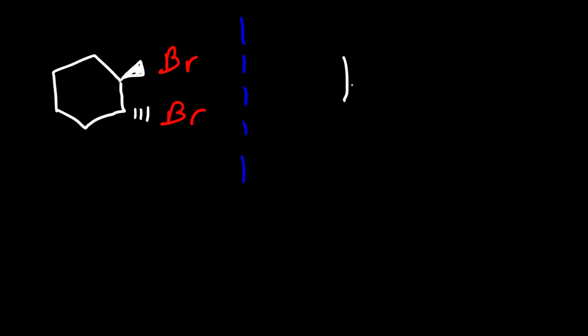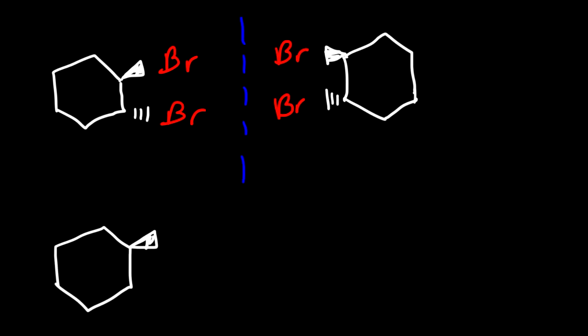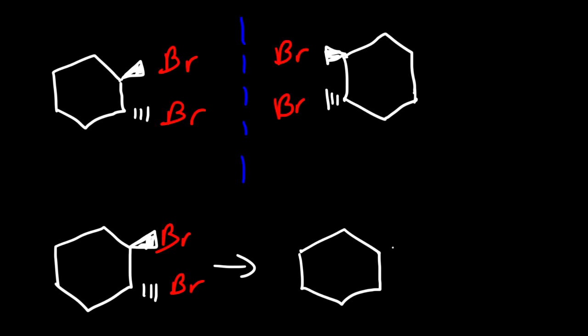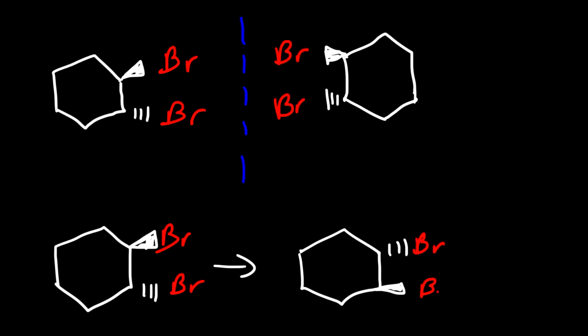Try drawing the enantiomer of this molecule. One way is to draw the mirror image. Another way — keeping the bromine atoms in the same position — is to switch the wedge with the dash and vice versa. Where there's a wedge, replace it with a dash; where there's a dash, replace it with a wedge. That's how we can draw the enantiomer by simply changing the configuration of the chiral centers.